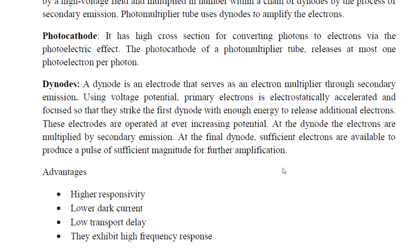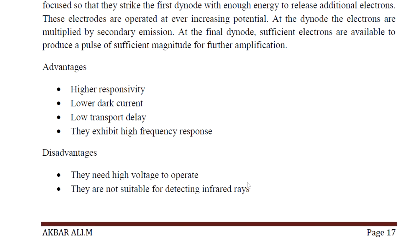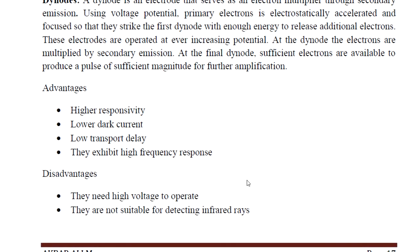At the final dynode, sufficient electrons are available to produce a pulse of sufficient magnitude for further amplification. The dynode chain is what makes the photomultiplier tube function.